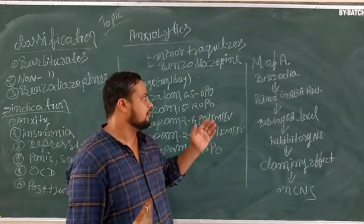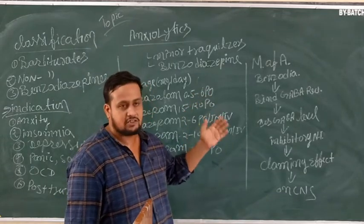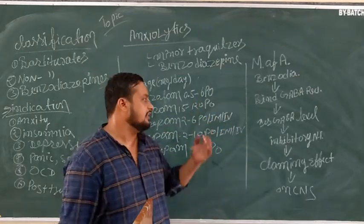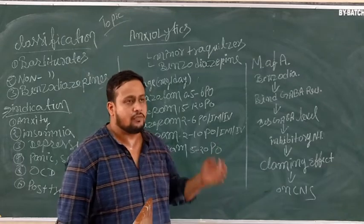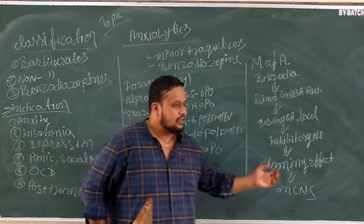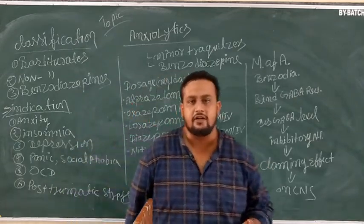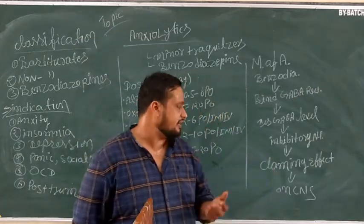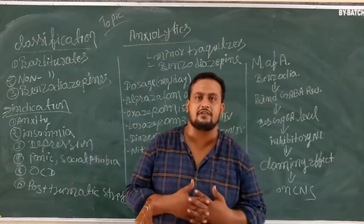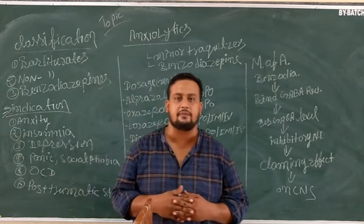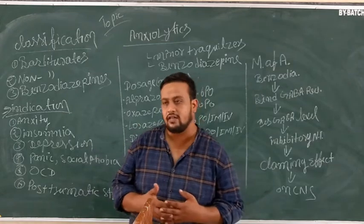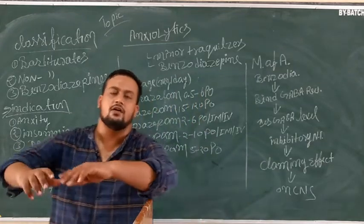So, benzodiazepines bind to the GABA receptor, then increase the level of GABA. GABA is an inhibitory neurotransmitter, and this inhibitory effect produces a calming effect on the central nervous system. When the CNS experiences this calming effect, anxiety, depression, and agitation are relieved.